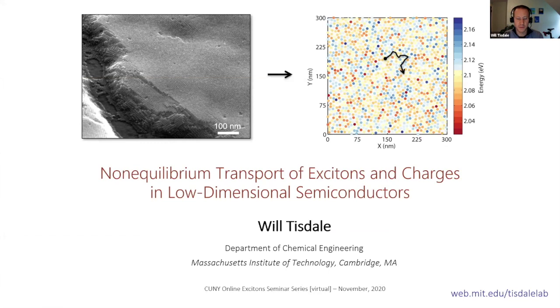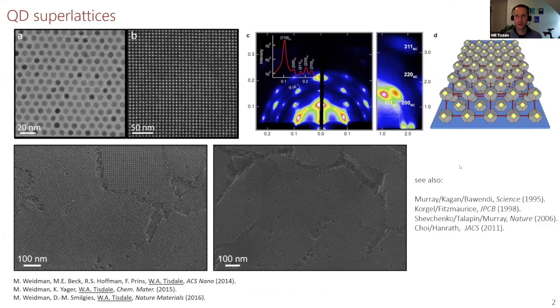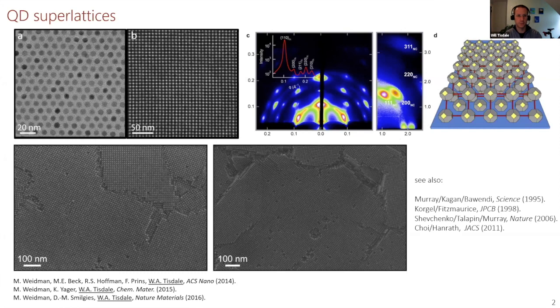I'll be talking about our work really over the past almost 10 years now studying non-equilibrium transport behavior in low-dimensional semiconductors. My group has studied a variety of semiconductor nanomaterials from quantum dots to two-dimensional semiconductors and transition metal dichalcogenides. We've done a lot of work recently in halide perovskites, but I want to revisit some older work in quantum dot assemblies that I still think is very relevant.